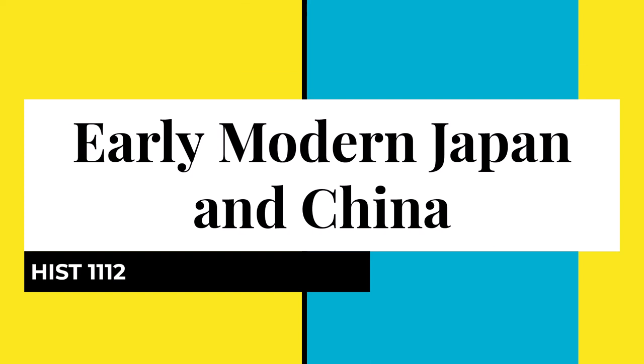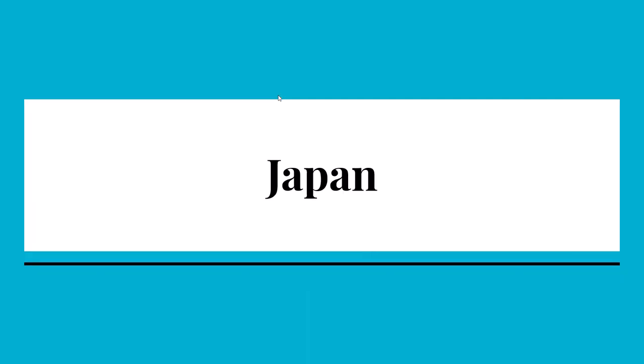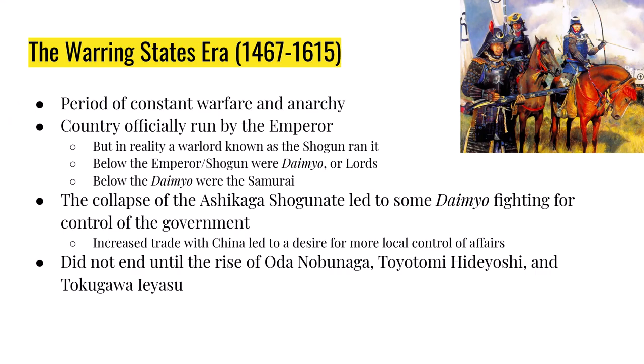Hello, good afternoon. We're going over the period of time known as early modern Japan and China — this is Chapter 21 in your textbook. I do Japan first and then China second. For Japan, I'm going to start in the 1400s. It's important to understand the development of modern Japan by seeing where Japan is coming from. From 1467 to 1615 there's this period of constant warfare and anarchy known as the Warring States Era.